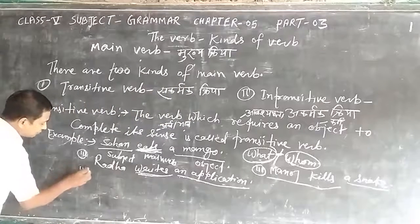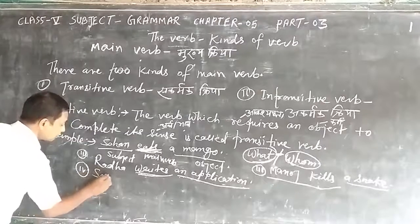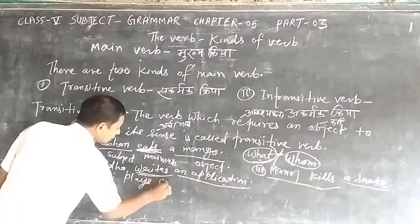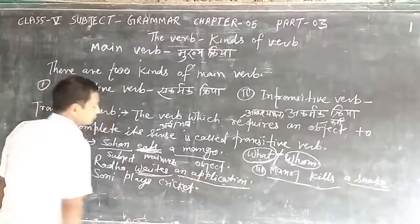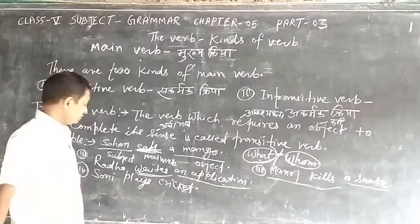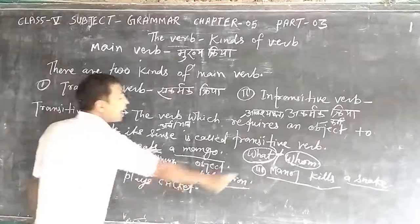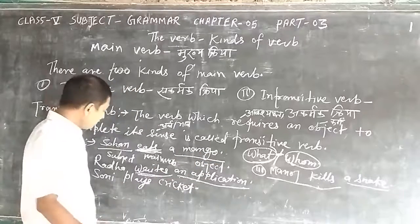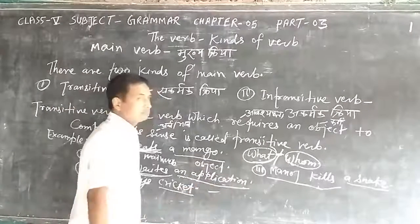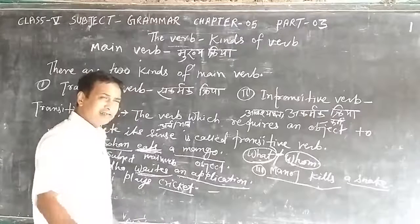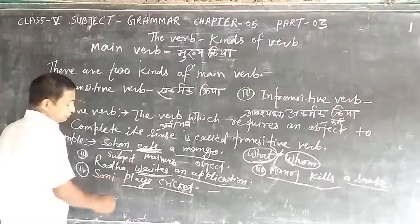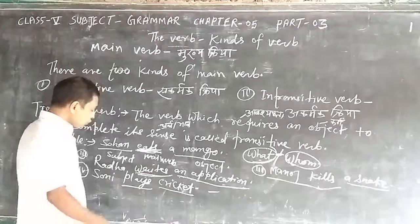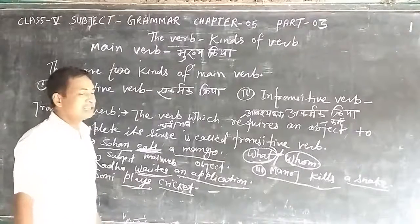Fourth example: 'Soni plays cricket.' If anybody asks 'Soni plays what?', the answer will be 'cricket,' 'football,' 'chess,' or some other games. So the verb 'play' requires an object to complete its sense, and 'plays' is a transitive verb.